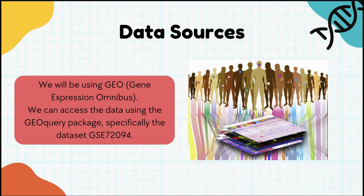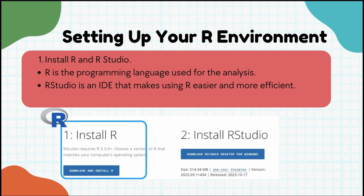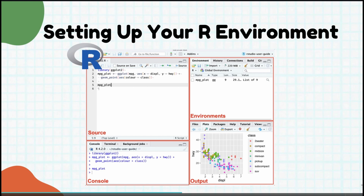Today however we'll focus on a dataset from GEO — specifically GSE72094, which contains lung cancer data that we'll use to study TP53 expression. To start, let's prepare our R environment. Make sure you have R and RStudio installed: R is the programming language we'll use, while RStudio is a user-friendly environment that makes coding in R much easier. You can download R from rproject.org and RStudio from rstudio.com — we recommend the desktop version for beginners.